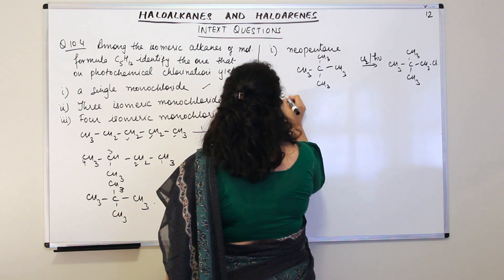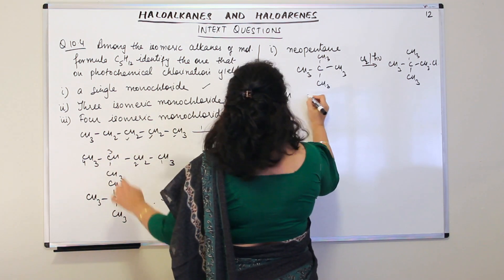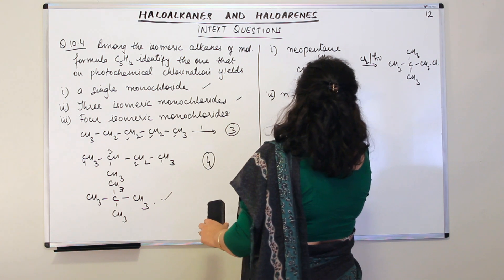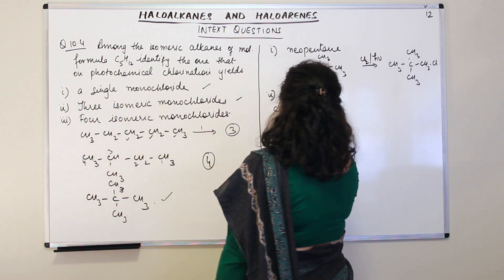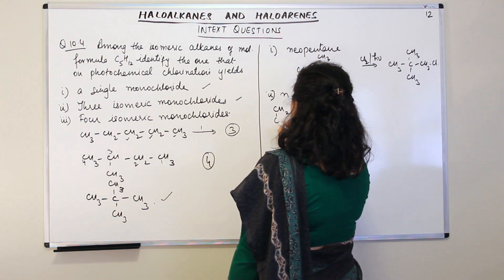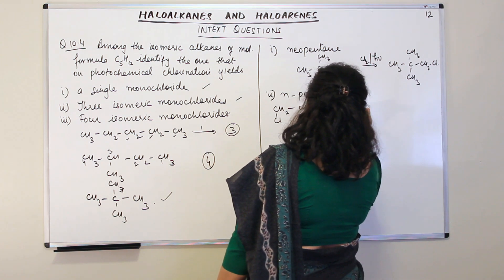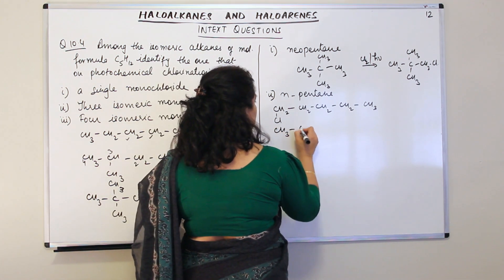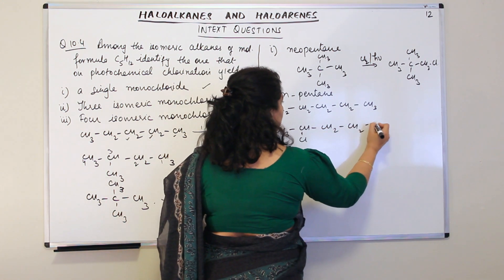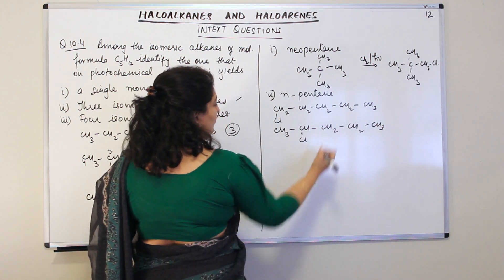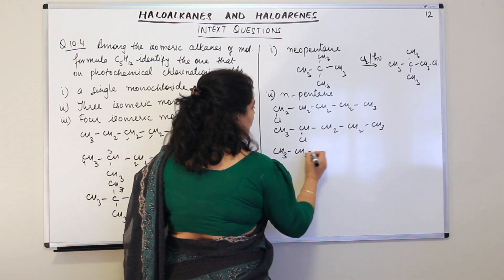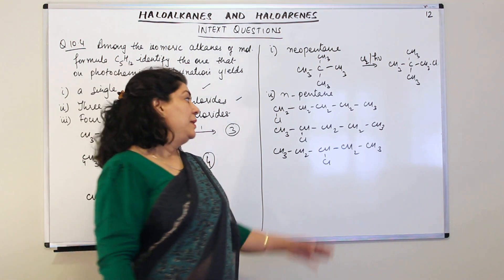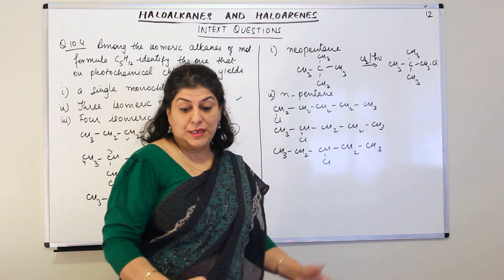The answer for three isomeric monochlorides is n-pentane. The three products are: substituting C1 gives CH₂Cl–CH₂–CH₂–CH₂–CH₃ (1-chloropentane); substituting C2 gives CH₃–CHCl–CH₂–CH₂–CH₃ (2-chloropentane); and substituting C3 gives CH₃–CH₂–CHCl–CH₂–CH₃ (3-chloropentane). These are the three different isomeric monochloro-substituted products from n-pentane.